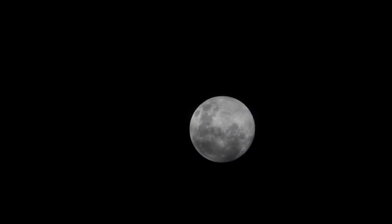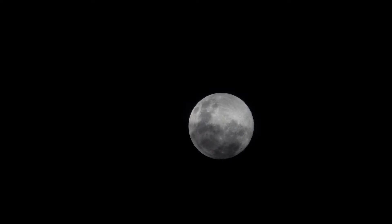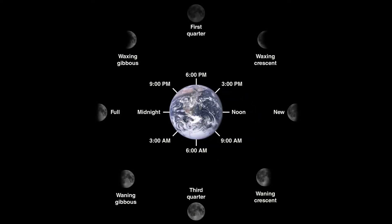Spectators from Earth are able to see different phases of the moon on a daily basis in the nighttime sky, as the moon revolves around the sun. This is caused by the position of the moon in respect to the Earth and Sun, which influences the portion of the moon that is illuminated as seen from Earth.